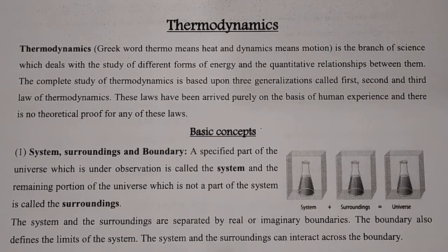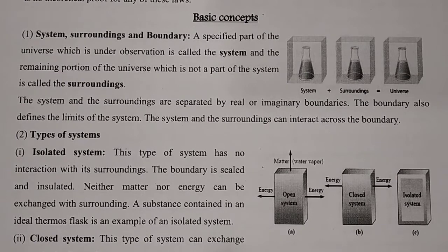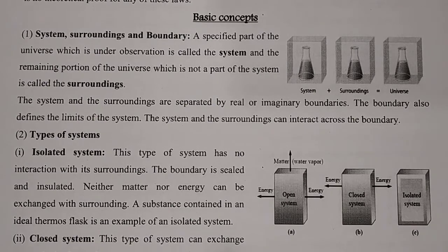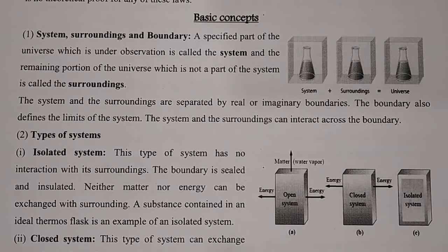Let's focus on the basic concepts: what actually is meant by system, surroundings, and boundary. A specified part of this universe which is under observation is called a system. Basically, you yourself are a system. The remaining part except you is known as the surroundings. Your house or your particular area is known as the system; the remaining part is entitled as the surroundings.